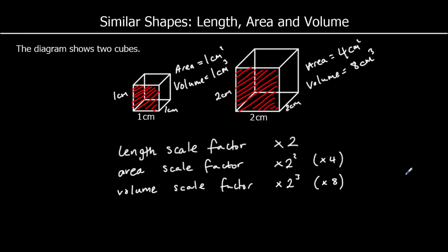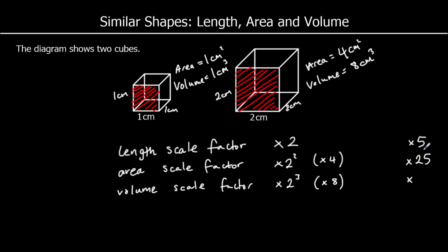So if we had a length scale factor of 5, our area scale factor would be times 5 squared, or times 25. And our volume scale factor would be times 5 cubed, or times 125.